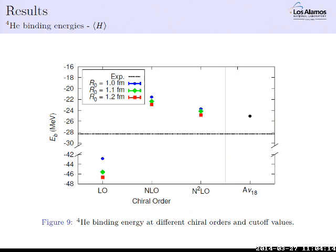For helium-4, the same trend appears: extremely overbound at leading order, with a large error band that narrows considerably at N2LO. A point showing Argonne V18 (two-body only) gives a similar result. Varying the spectral function regulator lambda-tilde from 1000 to 1400 MeV changes the N2LO helium-4 binding energy by less than ~1 MeV, less than 2%. The Monte Carlo statistical errors are present but too small to see in the plots.